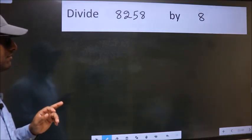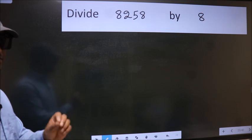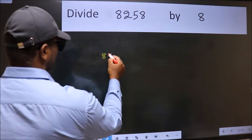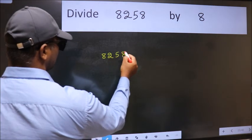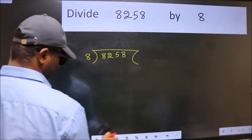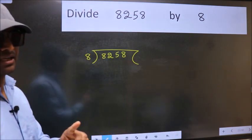Divide 8258 by 8. To do this division we should frame it in this way. 8258 here, 8 here. This is your step 1.